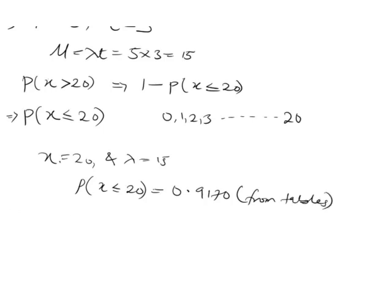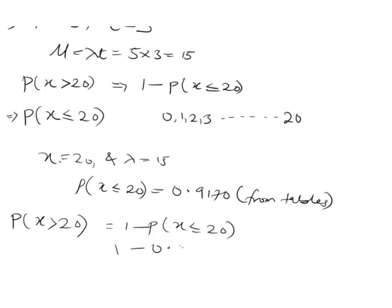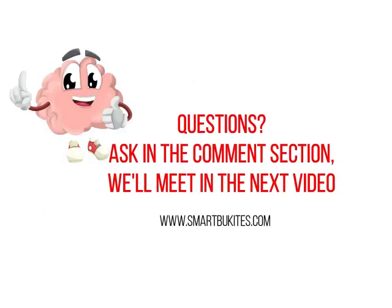Since we have P(X ≤ 20) = 0.9170, and we want the probability that more than 20 emergencies arrive during the three-hour shift, we compute: P(X > 20) = 1 minus 0.9170 = 0.0830. That is all for Part B. For any questions, we are waiting in the comments section. See you in the next video.